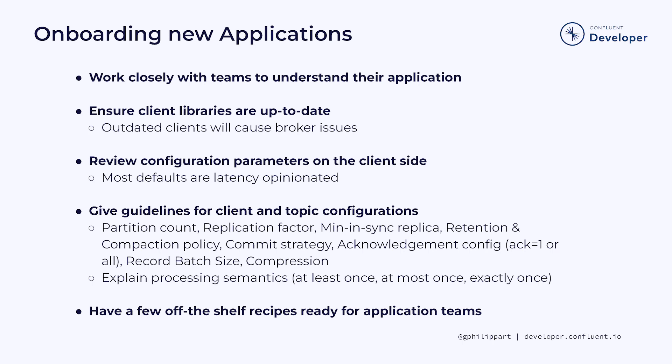Ensure developers regularly update their Kafka clients and libraries to avoid issues with brokers caused by outdated client versions. Review client-side configuration parameters, as most defaults are optimized for low latency and not high throughput. Also, provide clear guidelines for client and topic configurations such as partition count, replication factor, retention and compaction policies, or compression settings. It really helps when all teams understand the various processing semantics: at least once, at most once, exactly once — for example, how consumers will see messages which are part of an ongoing transaction depending on their isolation level.